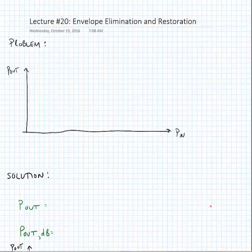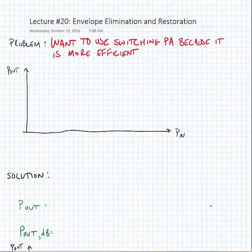Envelope elimination and restoration is a technique that tries to put the amplifier close to saturation as much as possible. Now one thing that envelope elimination or EER also does is allows us to use a switching amplifier in a linear transmitter. The challenge with using a switching power amplifier in a linear transmitter is that if we look at...